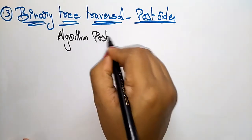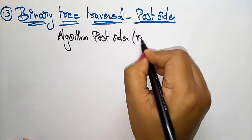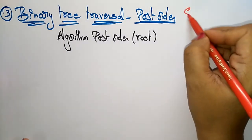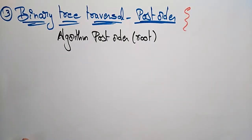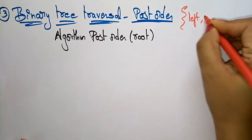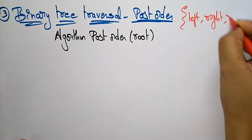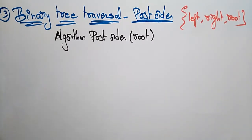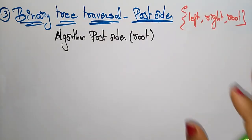The algorithm is called post-order. Based on the rule, post-order means the root has to be visited last. First left, next right, and then root. Let's see the algorithm: traverse a binary tree in left, right, and root sequence.